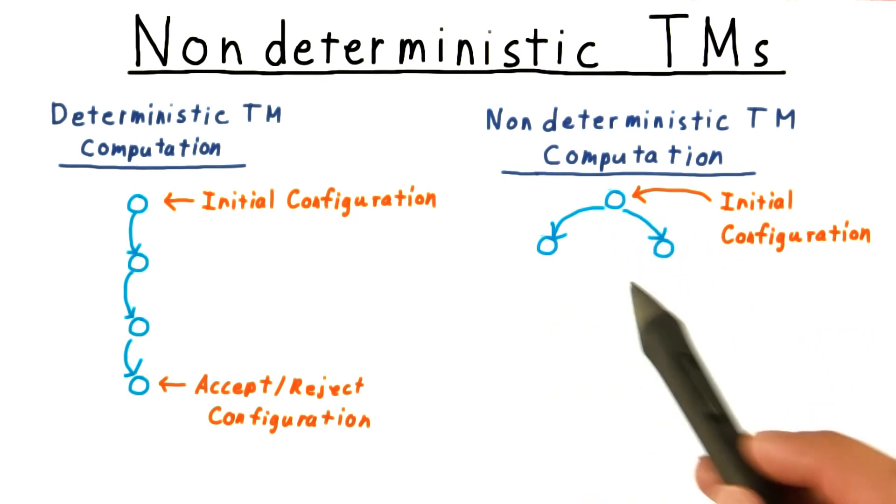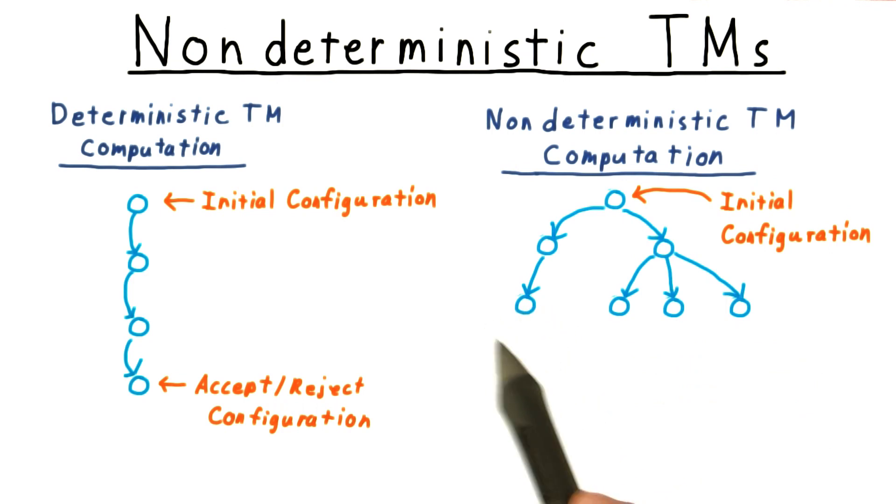This potential splitting continues at every step. Sometimes there might just be one possible successor state. Sometimes there might be three, or more.